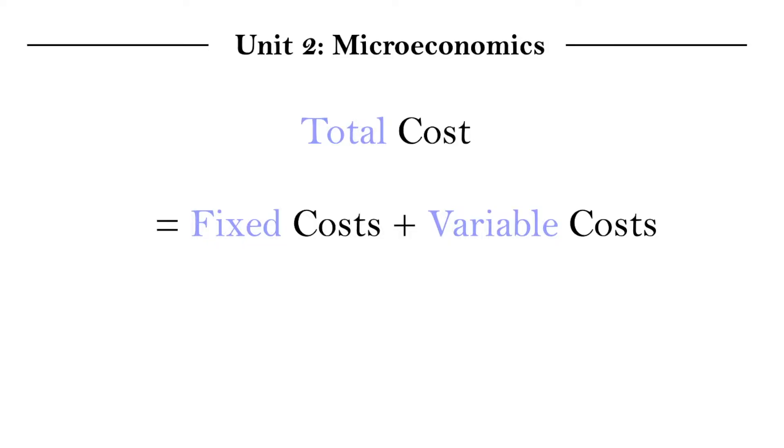I want us to now start thinking of the idea of the averages of each of these, which we know that average is just total value divided by quantity, so the number of something. So if we were to apply that to the costs that we have at this point, total cost TC divided by quantity Q, the number of goods we produced, that gives us our ATC, our average total cost.